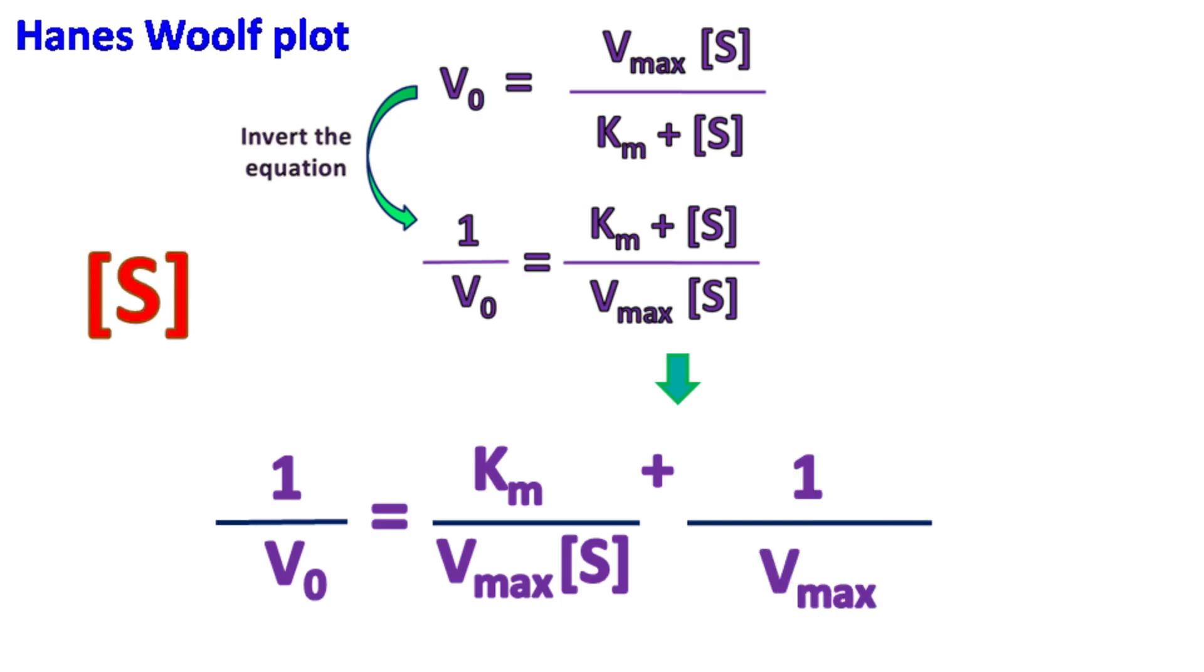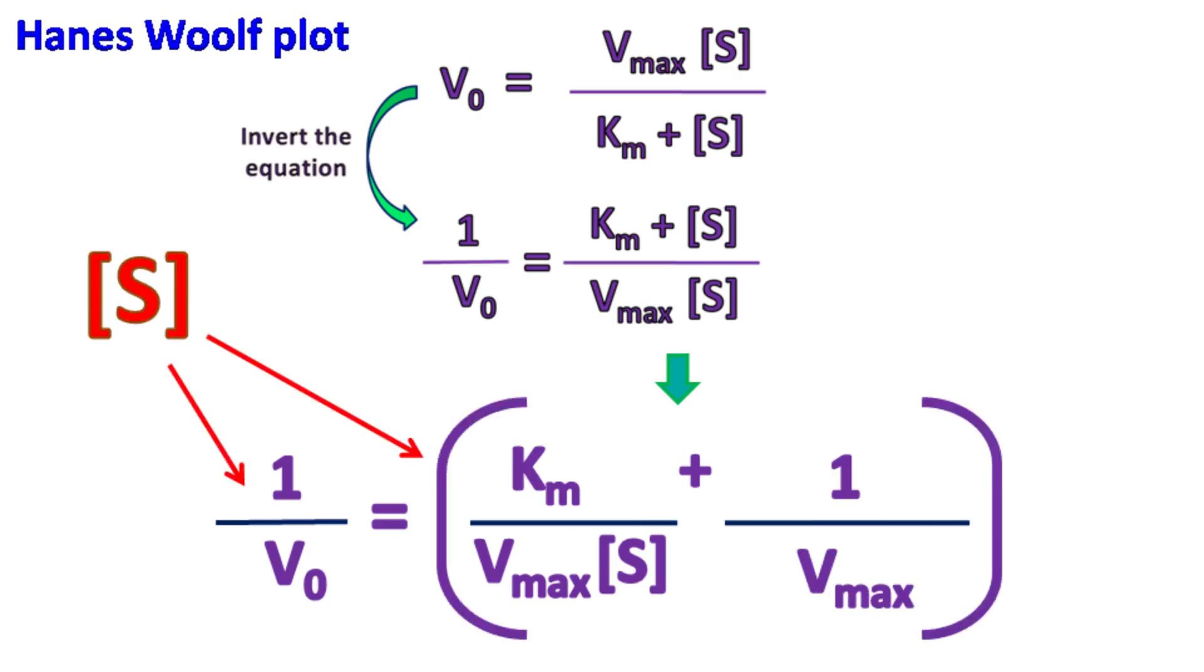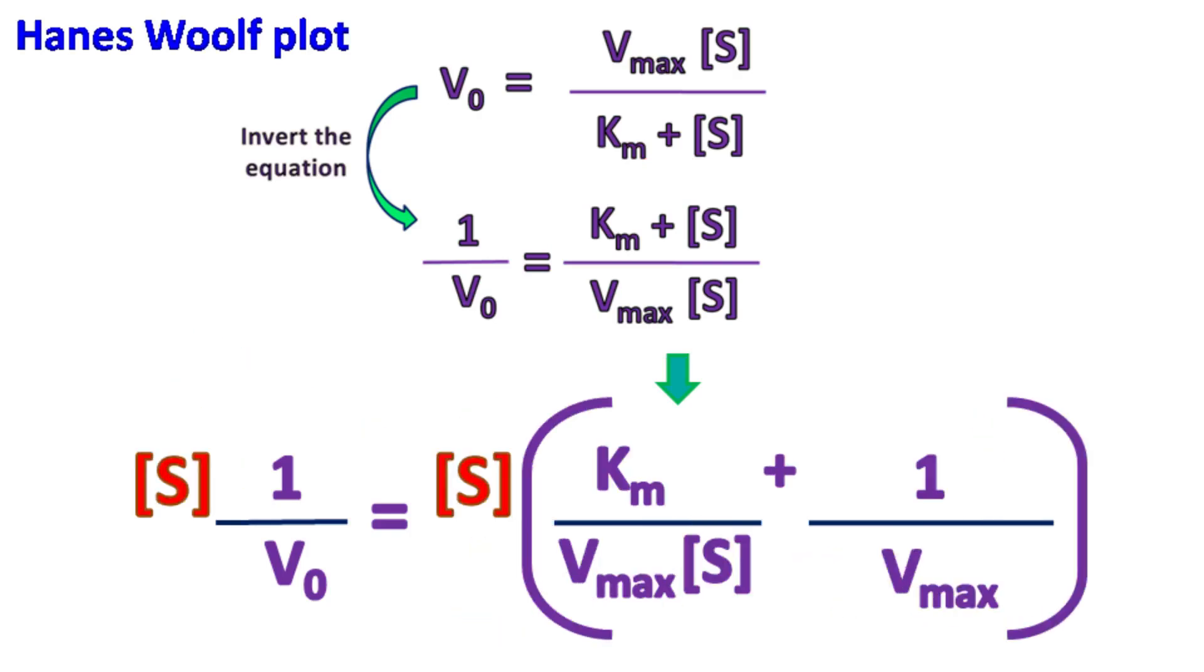Multiplying S on both sides, we get S upon V0 is equal to S into bracket Km upon Vmax into S plus 1 by Vmax.